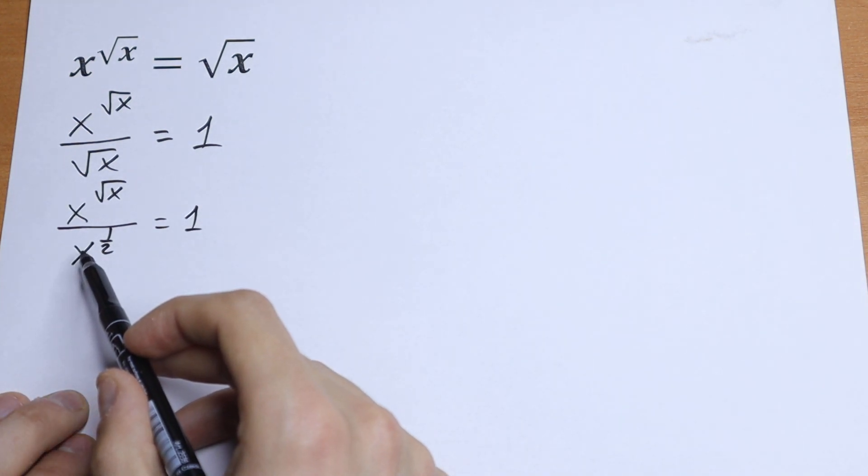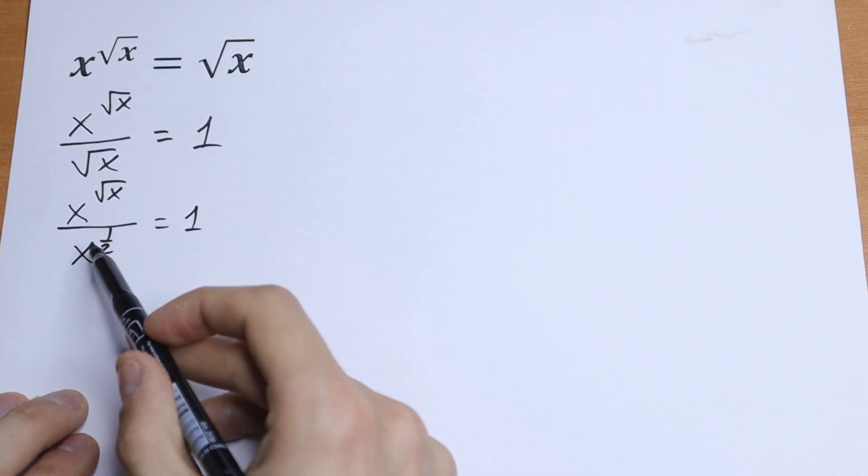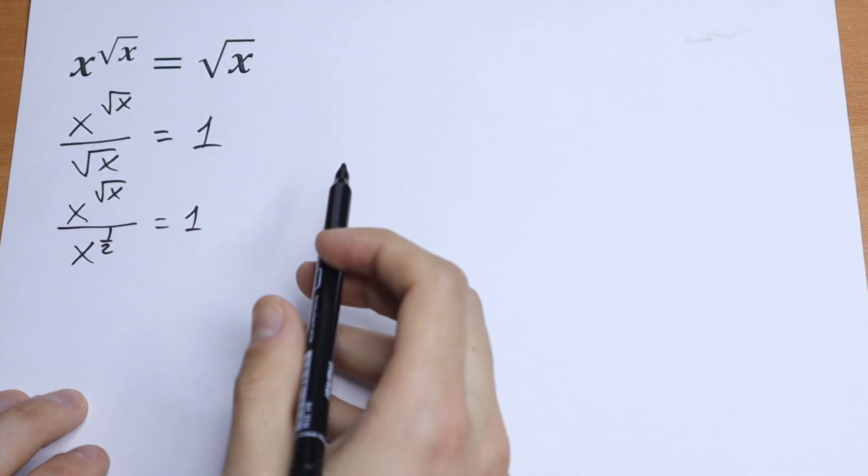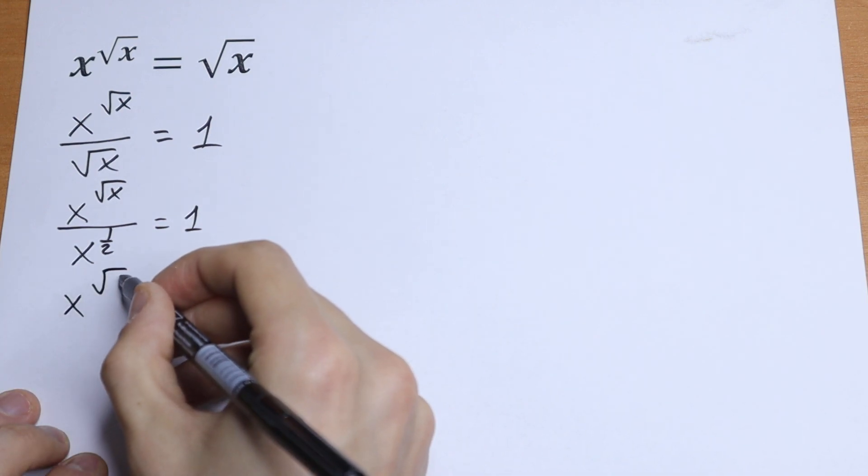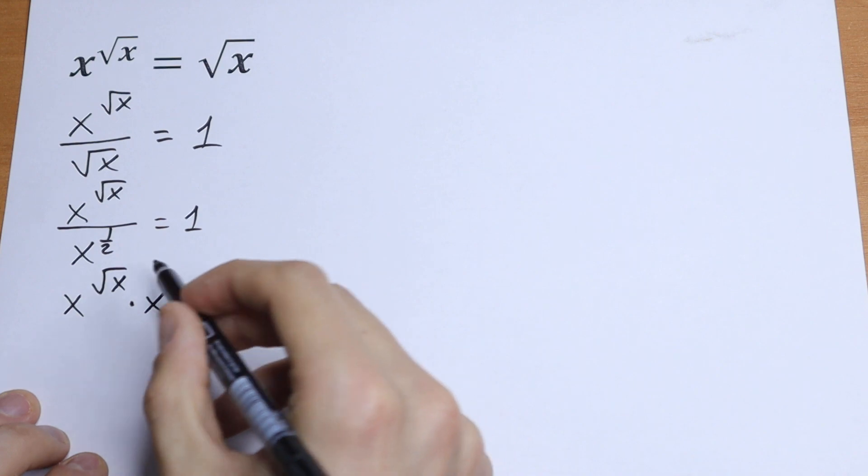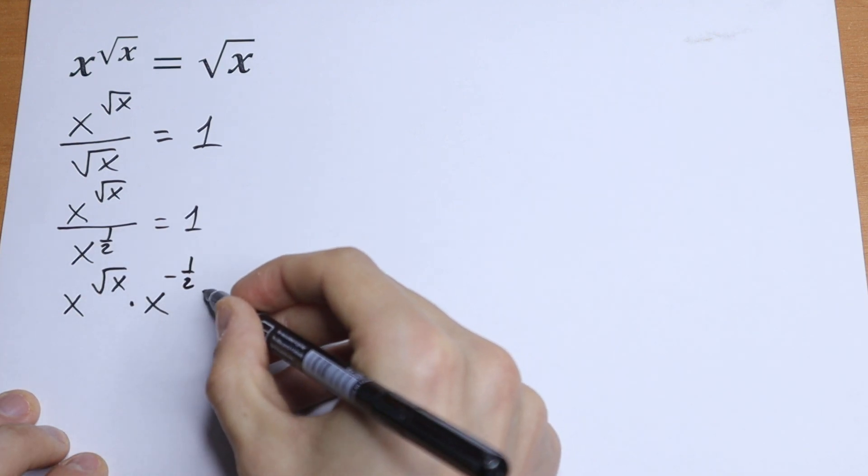If we have x in the denominator, we can bring it to the numerator but we need to put minus right here. Real good simplifying method. x to the power square root of x times x to the power minus one-half equals 1.